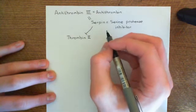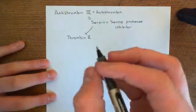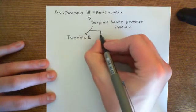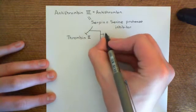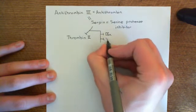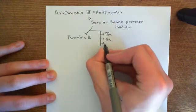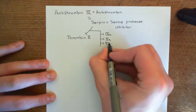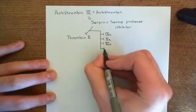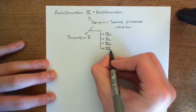Antithrombin-III also inhibits a whole bunch of other coagulation proteins. It inhibits factor 9A, factor 10A, and factor 11A. I will show you the pathways again so we can understand the role of this. This is why we need to discuss the coagulation pathways in such detail — so we can understand why inhibiting these factors is actually important.